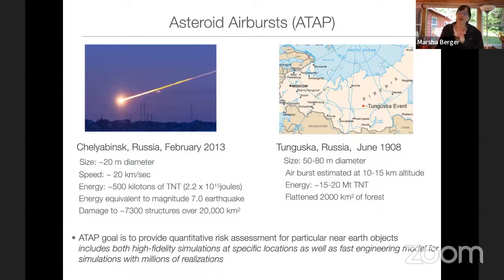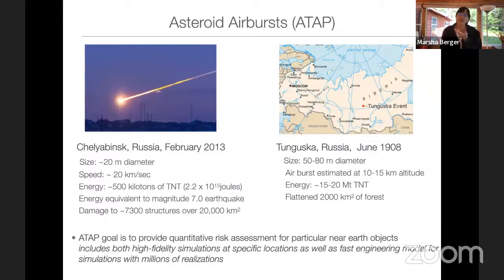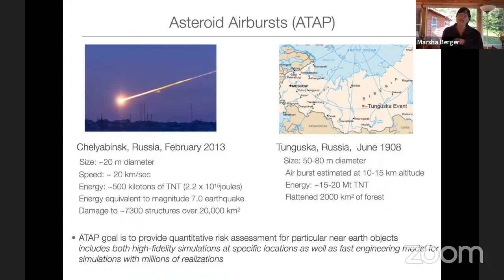Now I'll change direction and talk about asteroid airbursts and what a tsunami would look like from one. About ten years ago, there was such an event in Chelyabinsk, Russia. Nobody knew it was coming because it was approaching from the direction of the sun. By coincidence, another asteroid was expected that same day which caused almost no damage, but this one caused a lot of damage — luckily no deaths. It's referred to as the 20-20-20 asteroid: 20 meters in diameter, entering at 20 kilometers per second, at an angle of 20 degrees from the horizon.